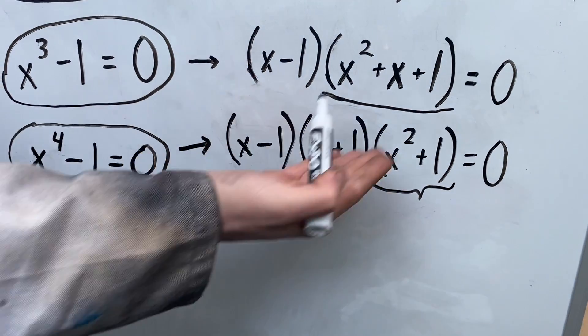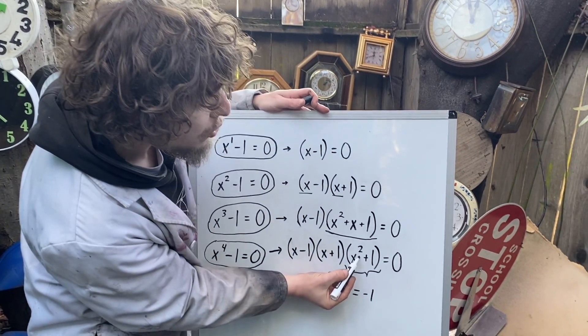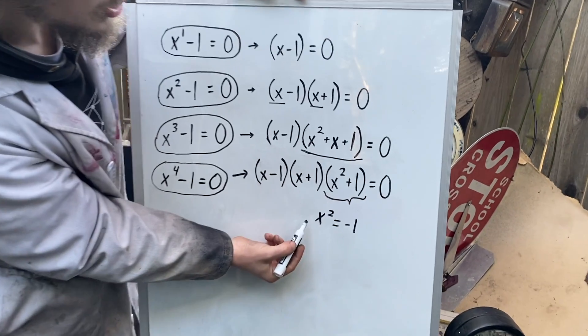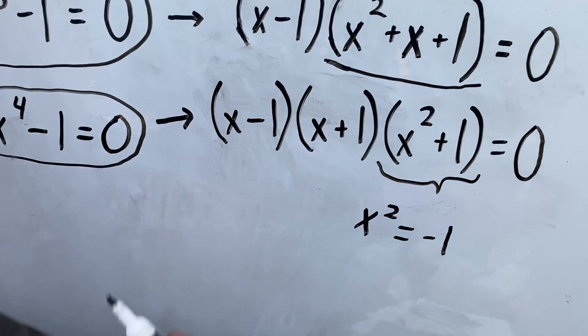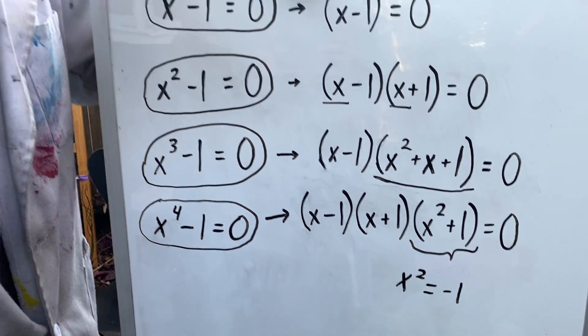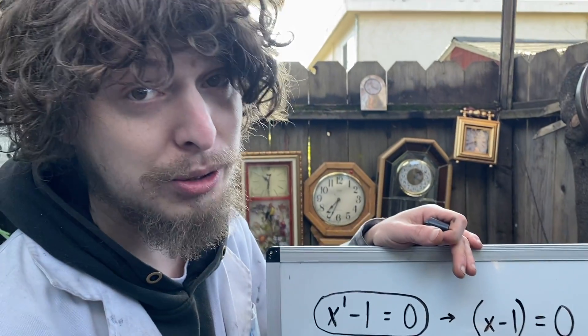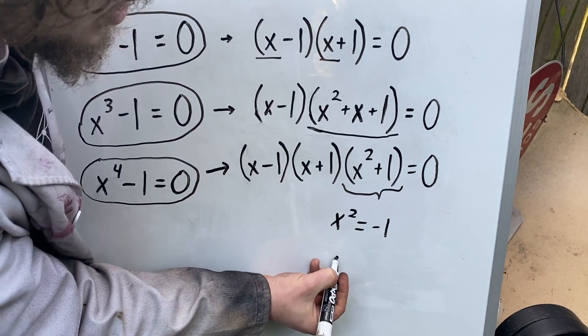So when can x squared plus one equals zero? If we're asking when x squared plus one can be equal to zero, that's like asking when x squared is equal to negative one, or asking when x is equal to the square root of negative one. So one of those hidden solutions here is that number some of you may dread, i.